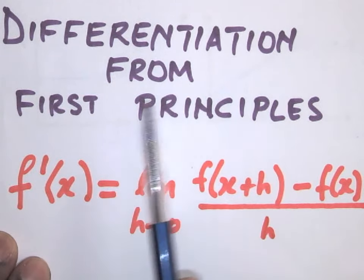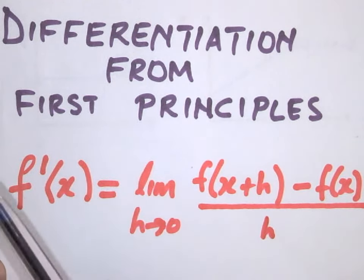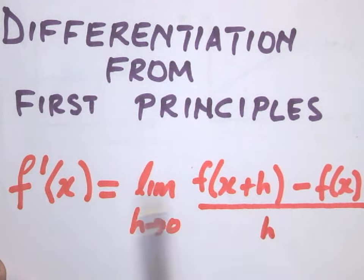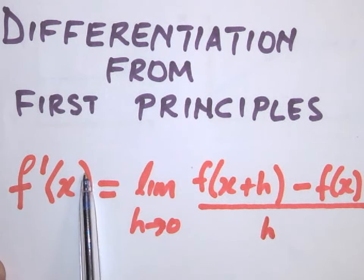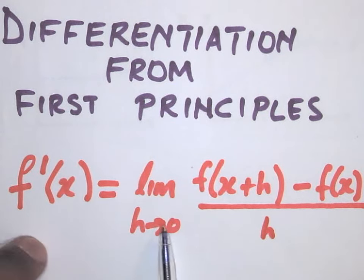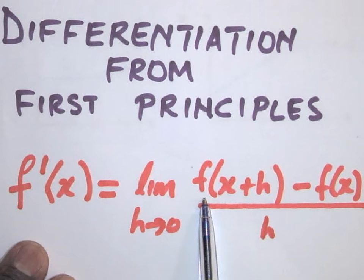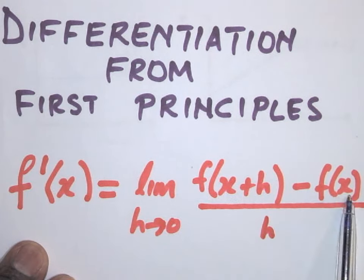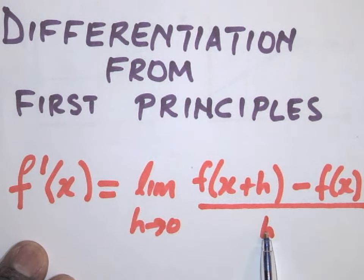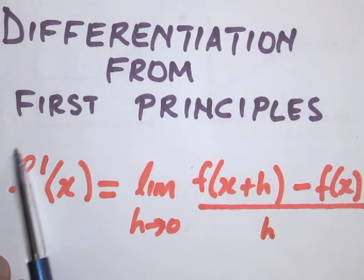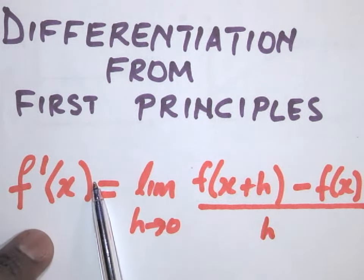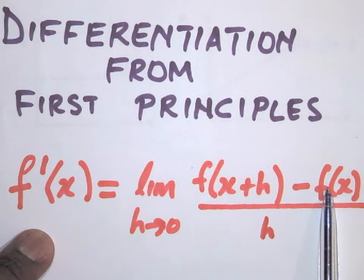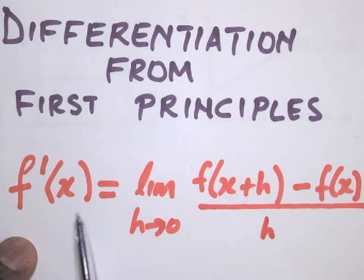Last time we looked at differentiation from first principles, where we used this formula to find the derivative of a function. We said f'(x) equals the limit as h approaches 0 of f(x+h) minus f(x), all over h. Where f'(x) is the gradient or the slope of the function f(x) at any given point x.